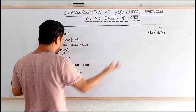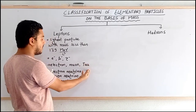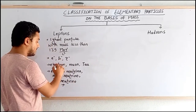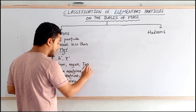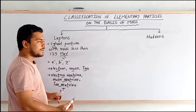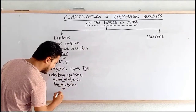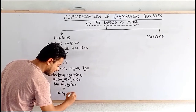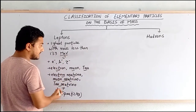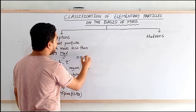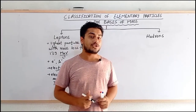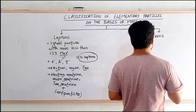Along with electrons, muons, tau, electron neutrino, muon neutrino, and tau neutrino, their antiparticles also fall under the same lepton category. So collectively we can say there are around 12 leptons that fall under this category.